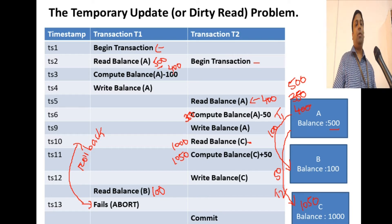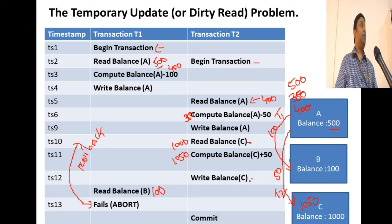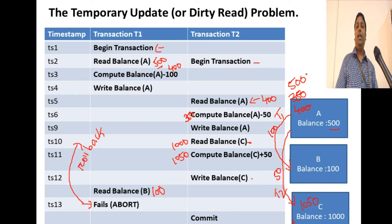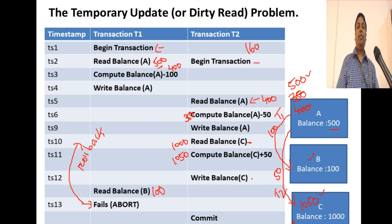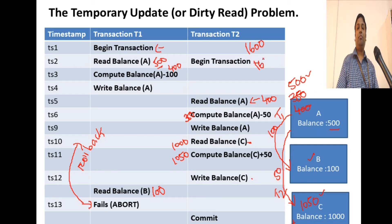T2 is still running and goes on to commit. The final values in the database become 500, 100, and 1050. Before the transactions started, the total was 1600. After they finish, we have 1650. There is an inconsistency caused by this rollback.